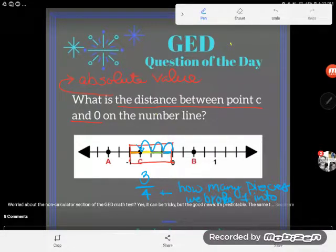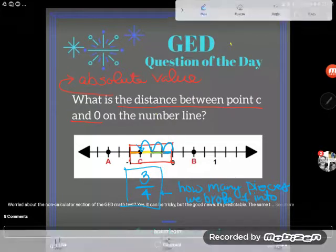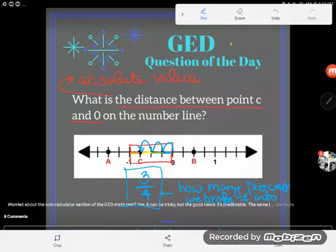Great, so what is the distance between point C and zero on a number line? It's three-fourths. Now I know what you're thinking. You're thinking Kate, you're wrong. Kate, you've screwed up in your video again. You're always doing that. I'm gonna stop watching your videos. That's not three-fourths, that's negative three-fourths, we're on the negative side.